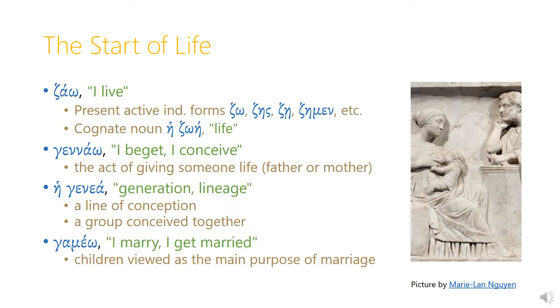Then in the plural we have dzamen, meaning 'we live,' etc. There's a cognate noun hedzoe, which means 'life,' derived from dzao, 'I live.'